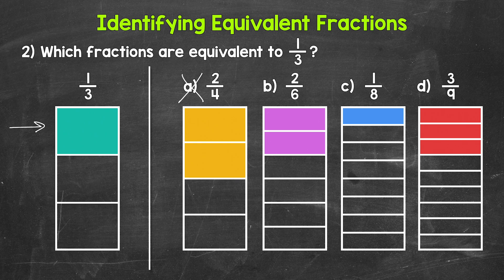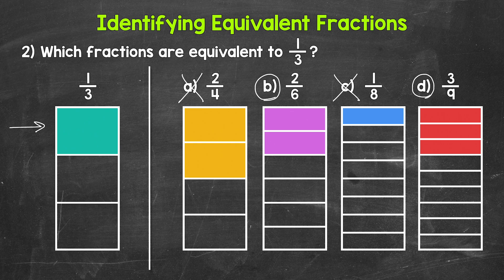How about B, two sixths. Is this an equivalent fraction? Yes, this is equivalent — the same amount of the whole rectangle is shaded in. Two sixths is an equivalent fraction. Moving on to C, we have one eighth. Is that an equivalent fraction? No, one eighth is less than one third. Less is shaded in, so one eighth is not equivalent. And then lastly, for D, we have three ninths. Is three ninths equivalent? Yes, we have the same amount of the whole rectangle shaded in. So three ninths is an equivalent fraction. So one third, two sixths, and three ninths are all equivalent fractions.